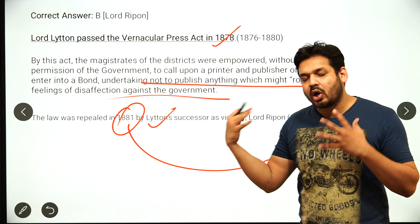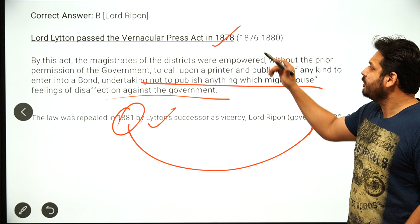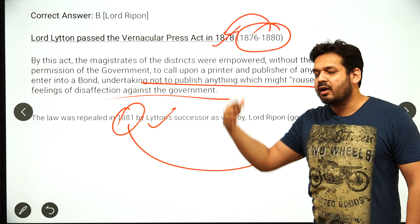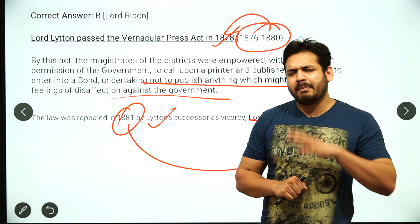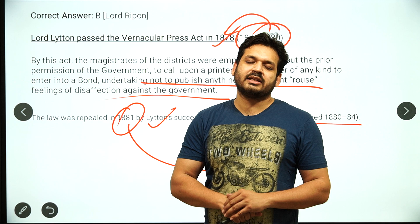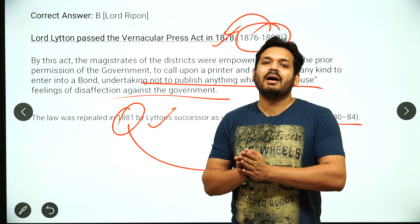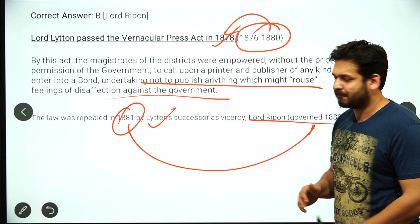It was Lord Ripon who repealed the Vernacular Press Act in 1881. Lord Lytton was Viceroy from 1876 to 1880 and imposed the act in 1878. Lord Ripon served from 1880 to 1884 and repealed it. Remember the Ilbert Bill controversy — can you tell me which Governor General was associated with it? Please mention it in the comment box.